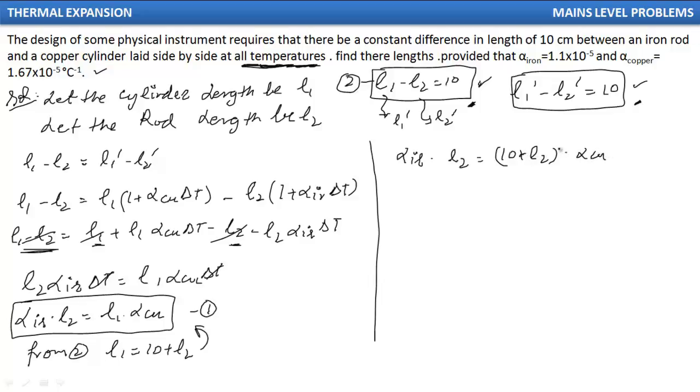If we look carefully, this is a linear equation in L2. We know alpha iron, alpha copper, 10 is a constant. This is a linear equation in L2. After solving this, we can find L2. When I substitute the values, I get L2 as 19.4 cm.